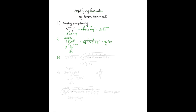Let's try number three — one without a coefficient: xy to the fourth times the square root of x to the tenth y. This portion is already outside the radical, so it's the inside part we need to work on simplifying. x to the tenth can be expanded — we can make ten x's here. There's ten x's and a y. So now for every pair, one of the pairs will come out of the radical. We cross out our pairs and bring one of the pairs out.